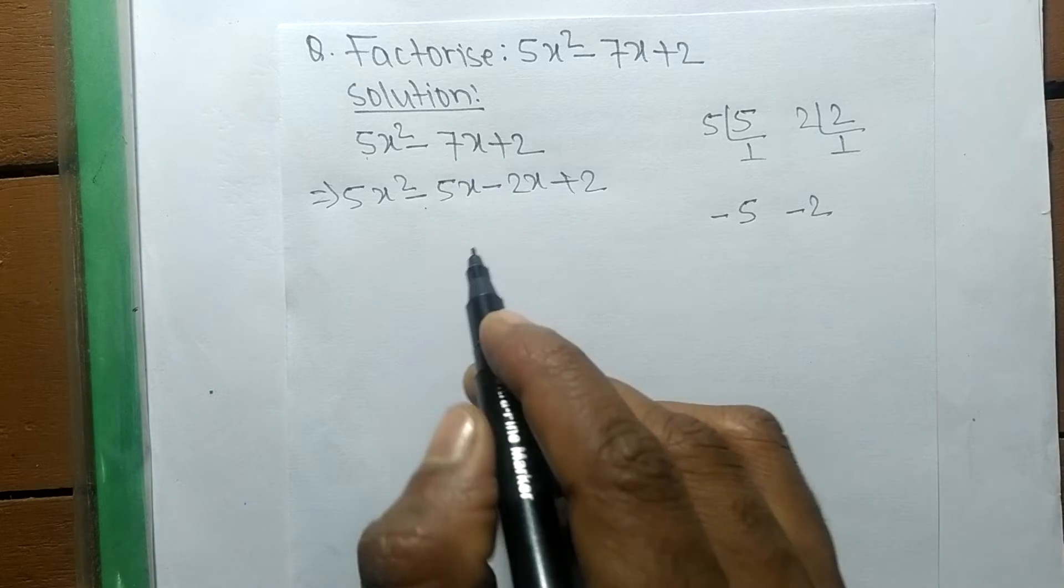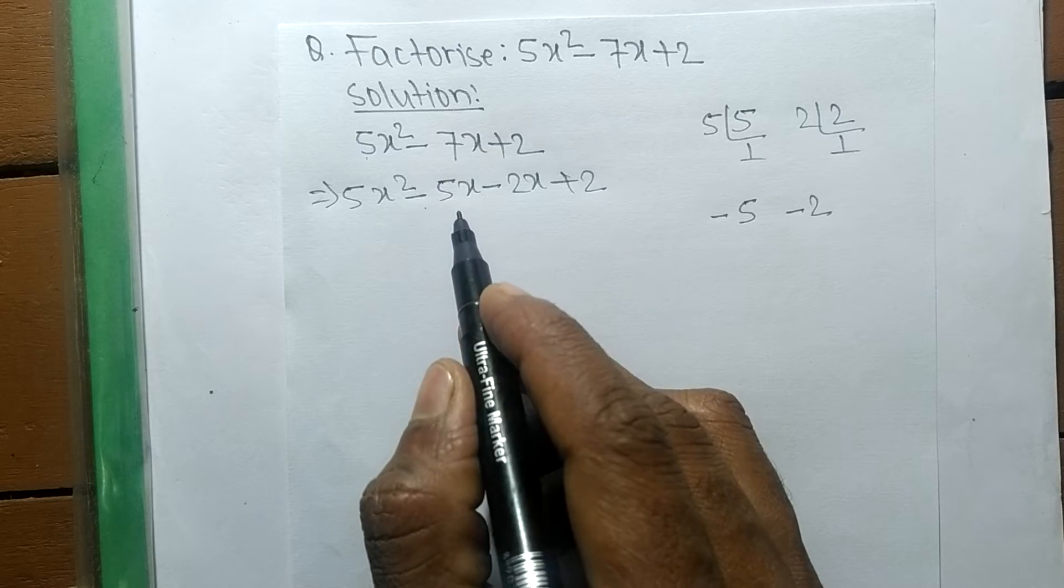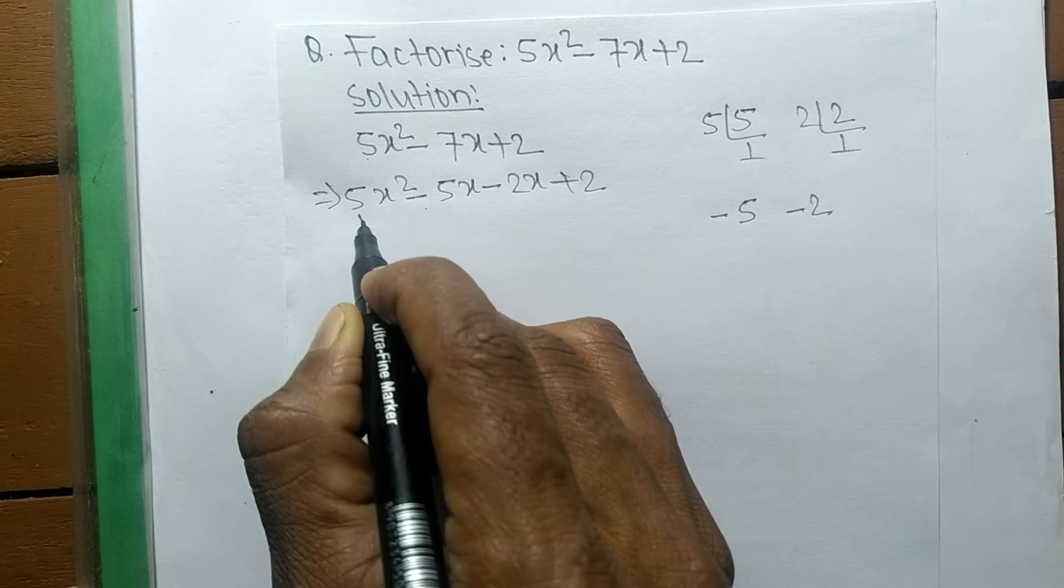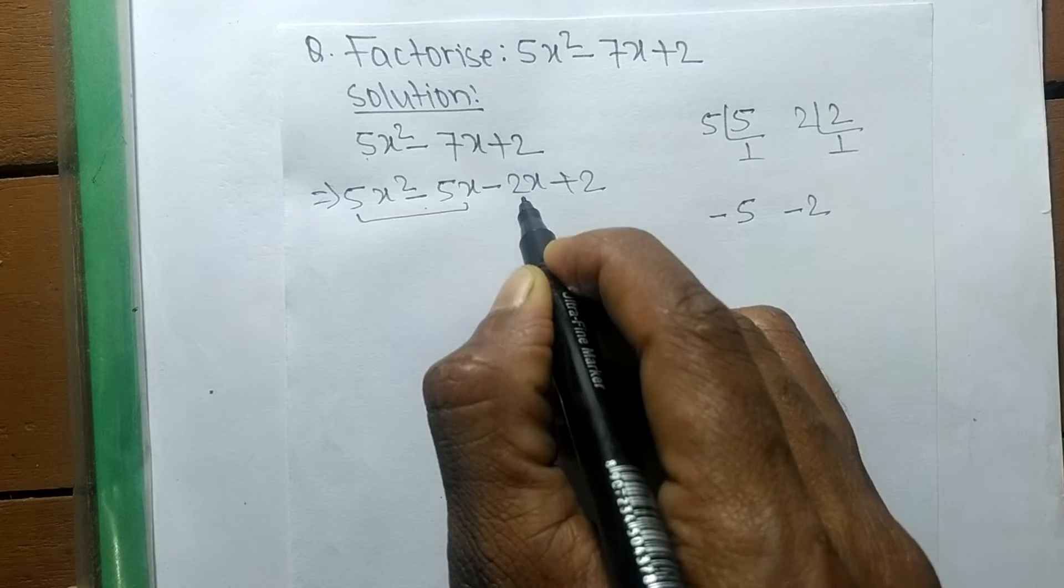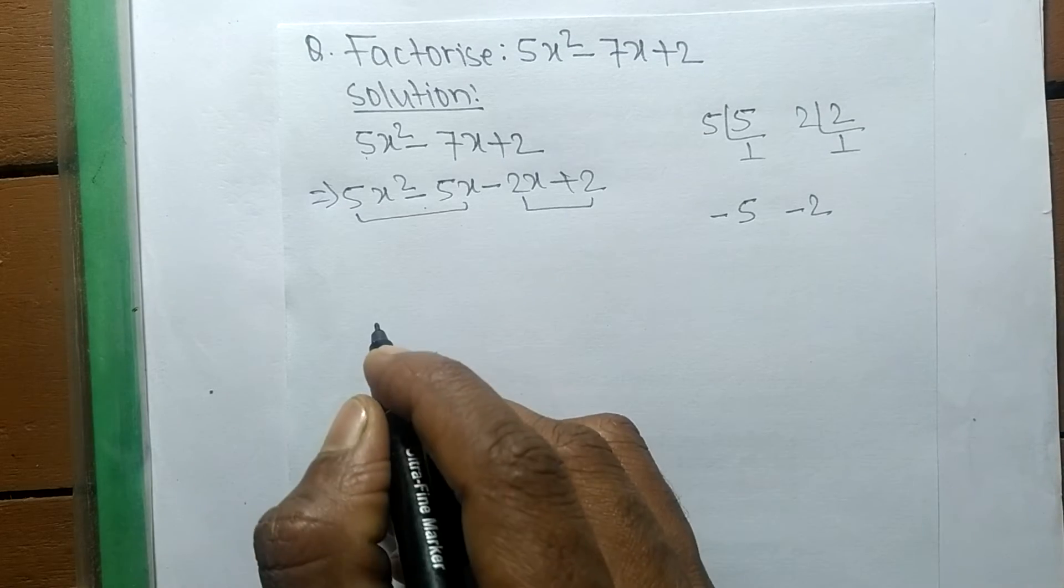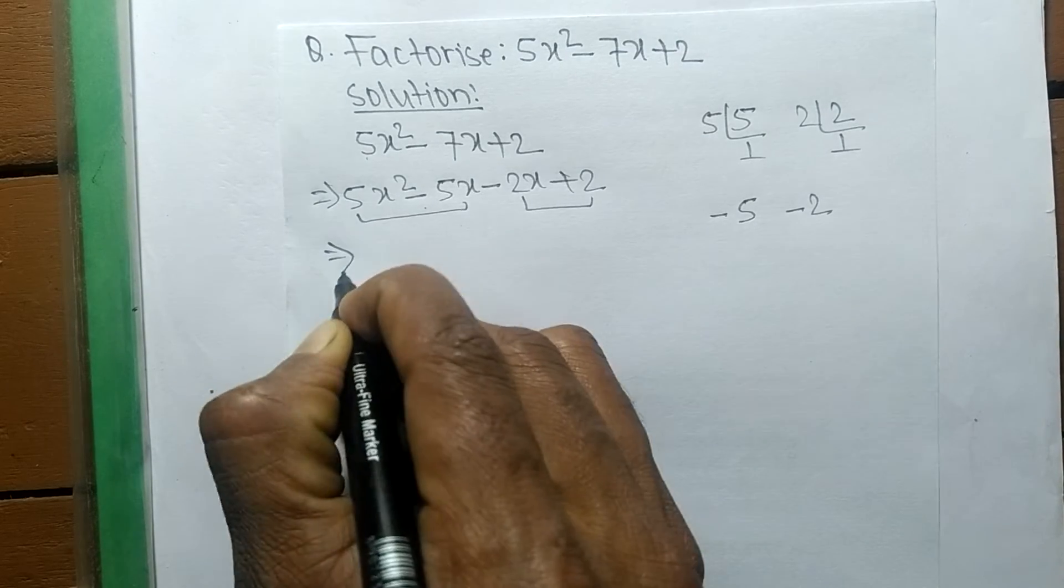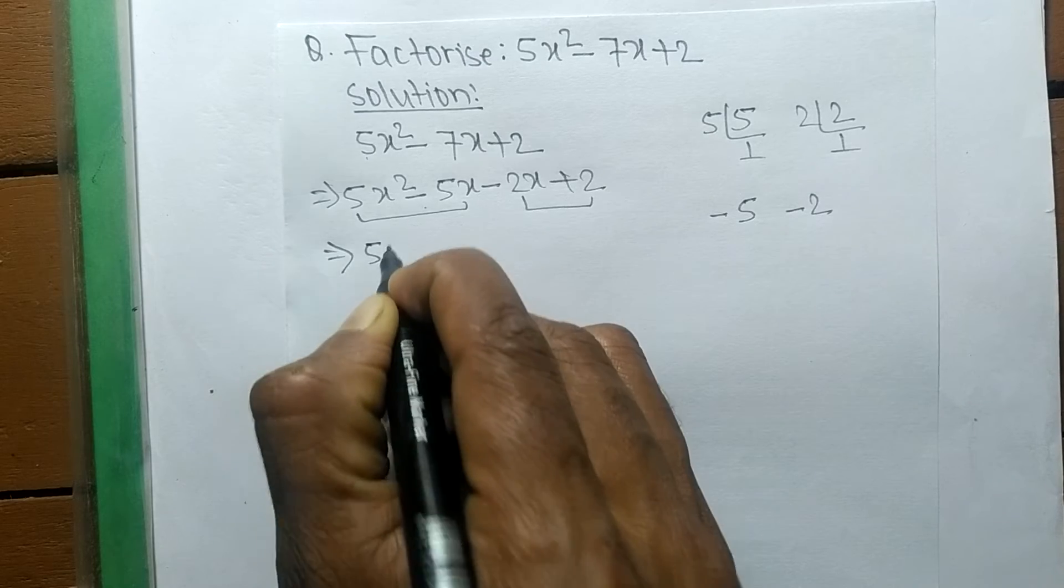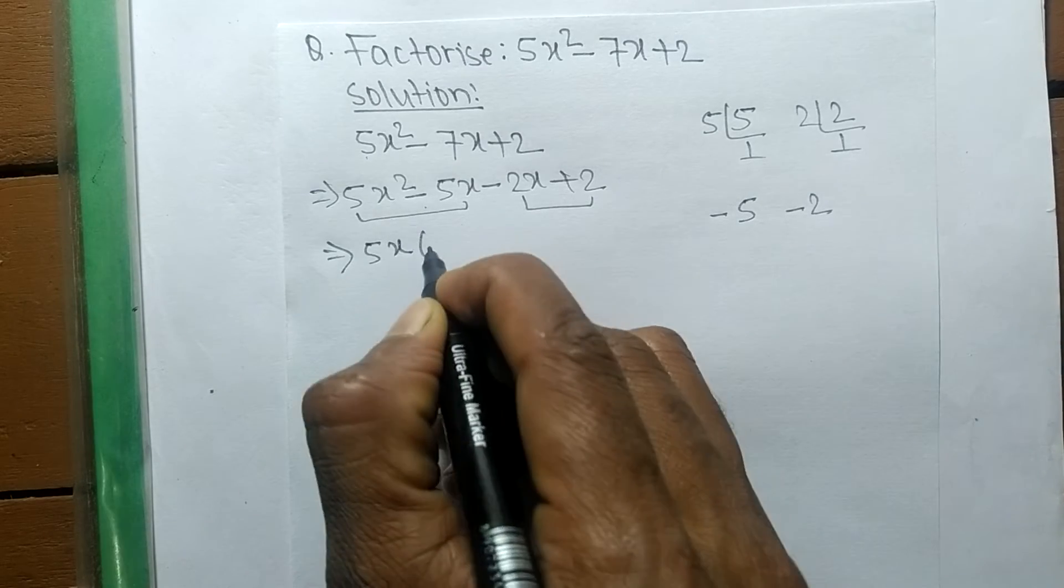Now we have to separate it into two pairs. So these both are the first pair, and these both are the second pair. In the first pair the common part is 5x, so the remaining is x minus 1.